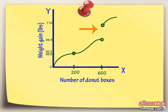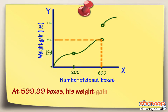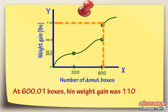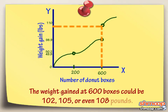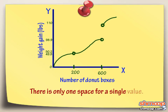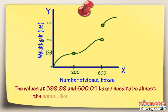Now let's look at the jump at 600 boxes. A limit requires that the Y values are the same going from X values greater than or less than the X value in question — in this case, 600. At 599.99 boxes, his weight gain was 98.9 pounds. At 600.01 boxes, his weight gain was 110 pounds. It might look like the weight gained at 600 boxes could be 102, 105, or even 108 pounds. But the problem is that there is such a small space between 599.99 and 600.01 that there's only one space for a single value. The values at 599.99 and 600.01 boxes need to be almost the same, like at 200, for the limit to exist.